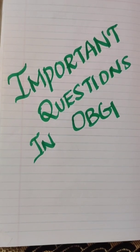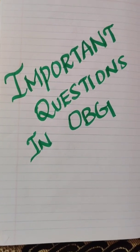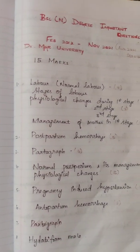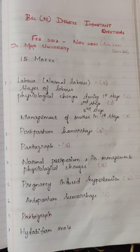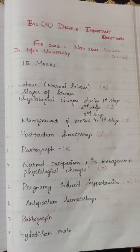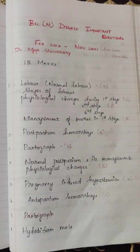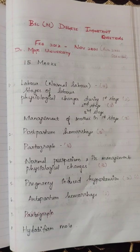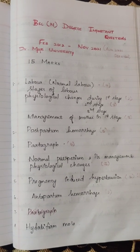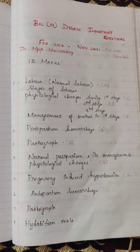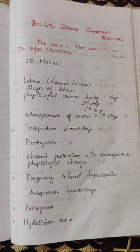Hi, now we are going to talk about important questions in OBG for BAC nursing students. This is from the MGI University question paper from February 2012 to November 2021, that is the August 2021 session. We are going to cover all the important questions and mention how many times each has been repeated. This is very useful for your exam preparation.